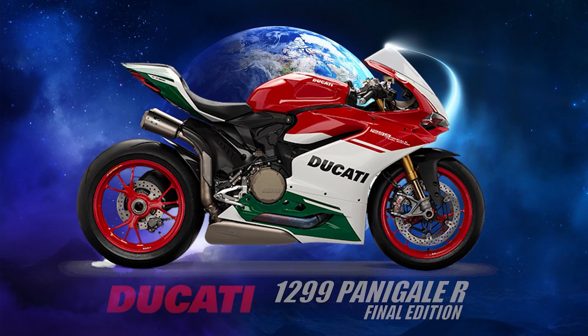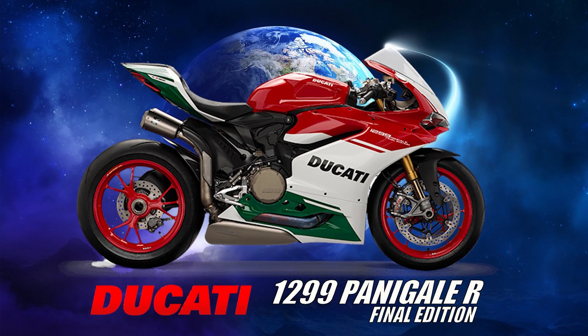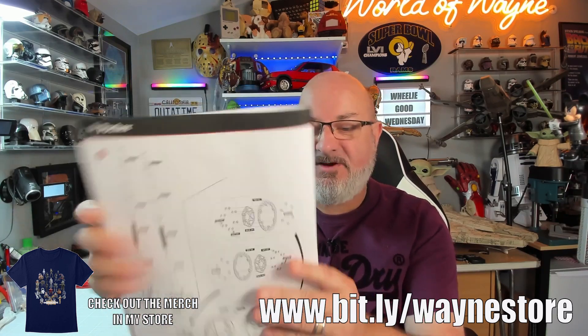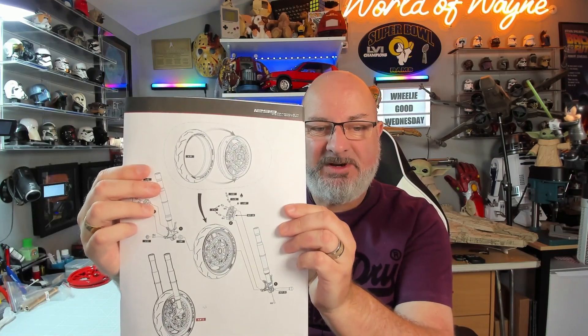We're going to be doing the next part of the Pocher Ducati Final Edition 1299R. I've said that completely out of order. The bike is just there at the moment, and it's going to stay there, because today we're going to be working on the forks and the front wheel, which is pretty much one of the most iconic things on the bike.